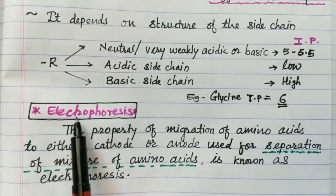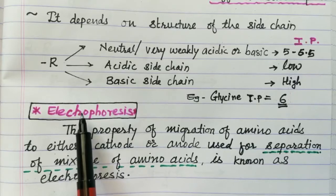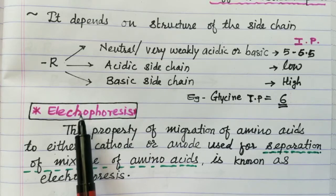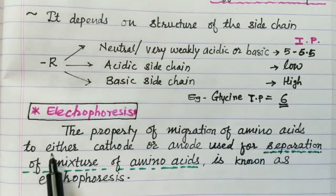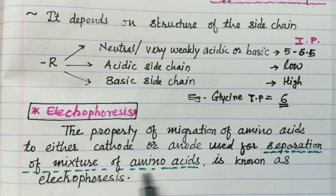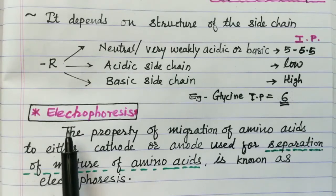Electrophoresis can be used for the separation of a mixture of amino acids — doing electrophoresis on a mixture of amino acids gives you separate individual amino acids. The property of migration of amino acids to either cathode or anode used for the separation of a mixture of amino acids is known as electrophoresis. These are all the properties of amino acids.